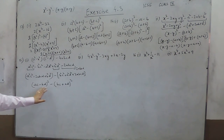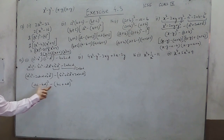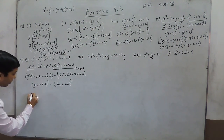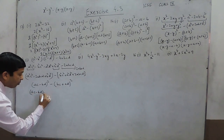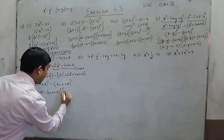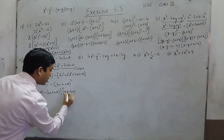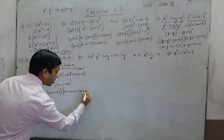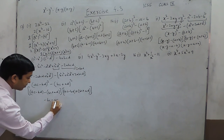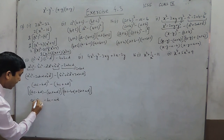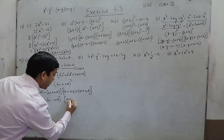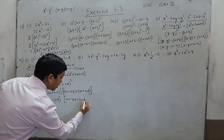Now ac minus bd can be treated as x and bc plus ad as y, so it is again x square minus y square. This gives ac minus bd minus bc minus ad as the first factor. The second factor will be ac minus bd plus bc plus ad. So these are the two factors.